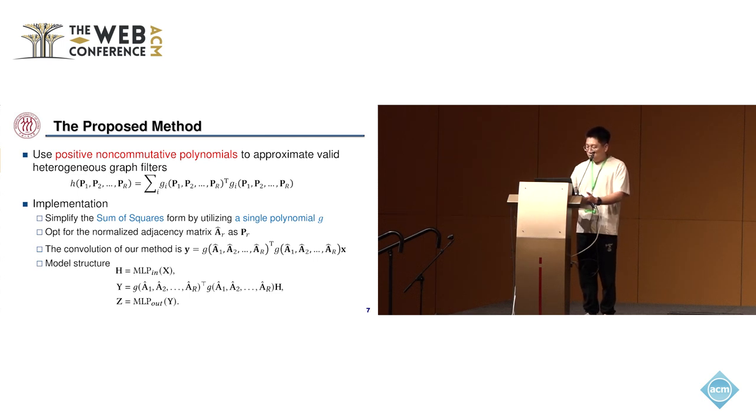Therefore, we simplify the sum of squares form by utilizing a single polynomial G. It is an arbitrary non-commutative polynomial. Remarkably, despite focusing only on learning a single polynomial function, the experimental results demonstrate that this approach shows excellent performance.